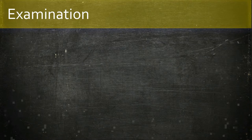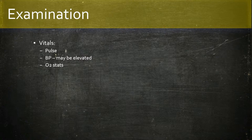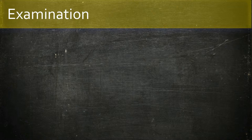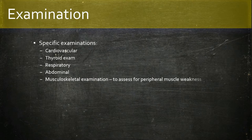For the examination, start with vitals — pulse and blood pressure, which may be elevated for the reasons discussed, and oxygen saturations. Then conduct a general examination looking for the classic signs of Cushing's, followed by specific examinations including cardiovascular, thyroid, respiratory, abdominal, and musculoskeletal exams to look for peripheral muscle weakness.